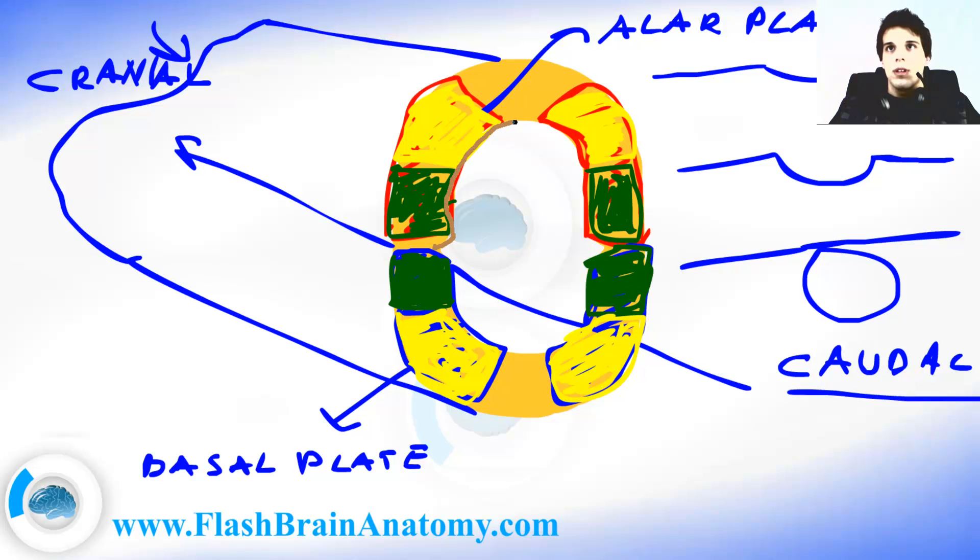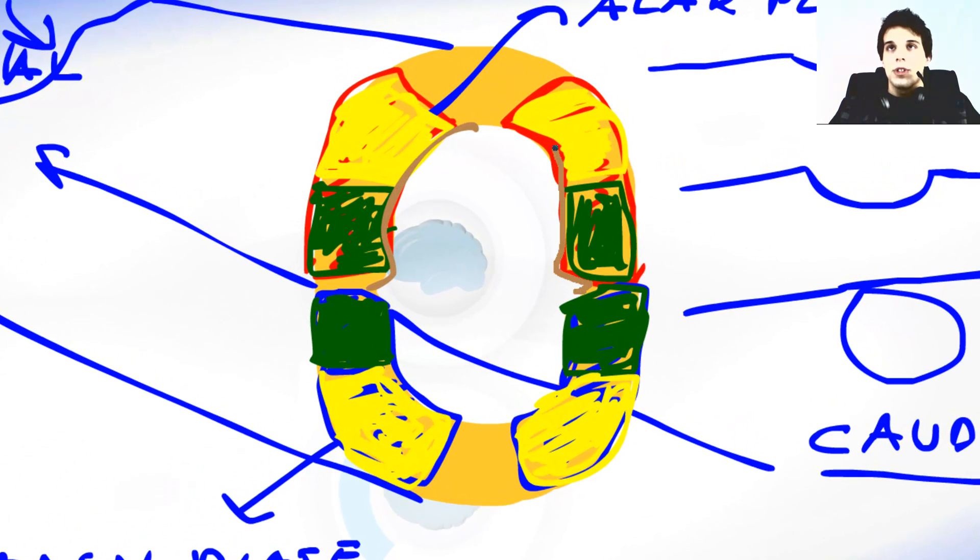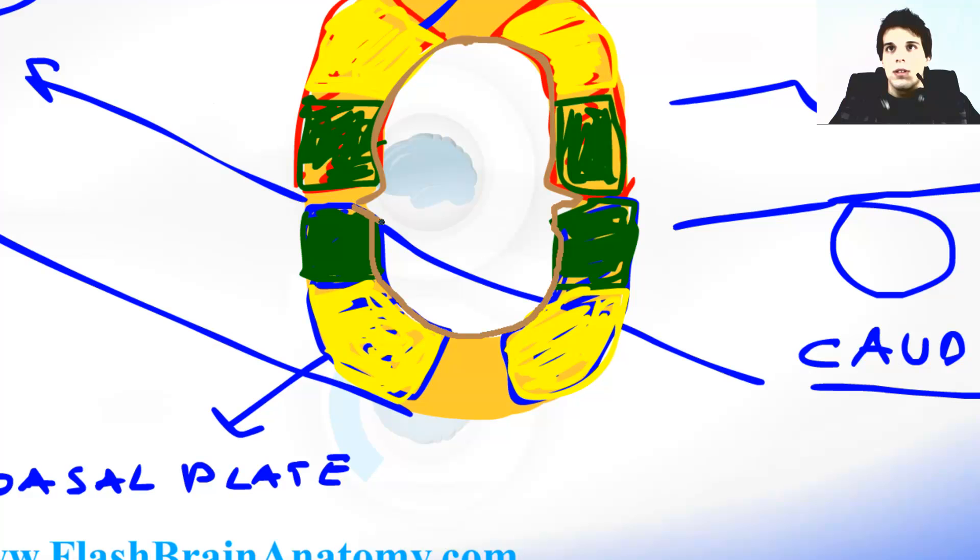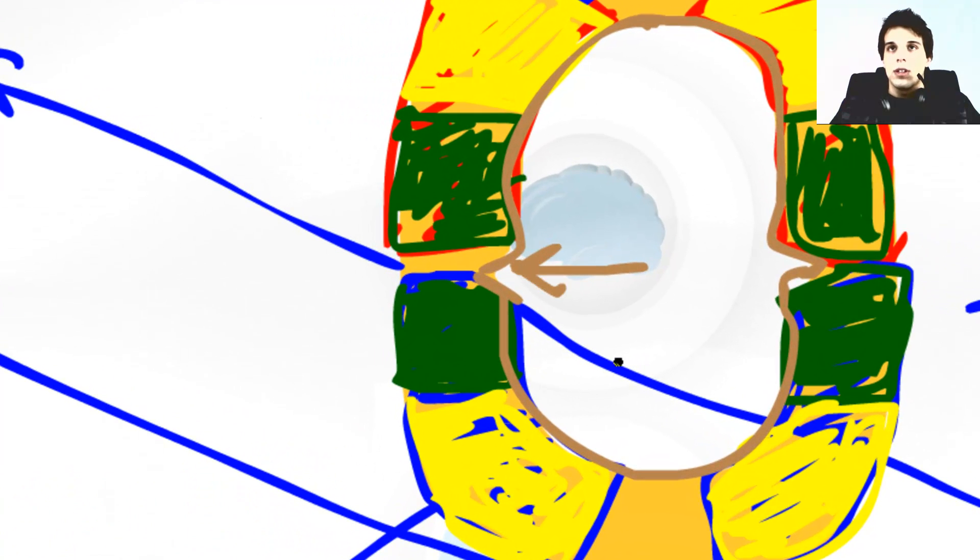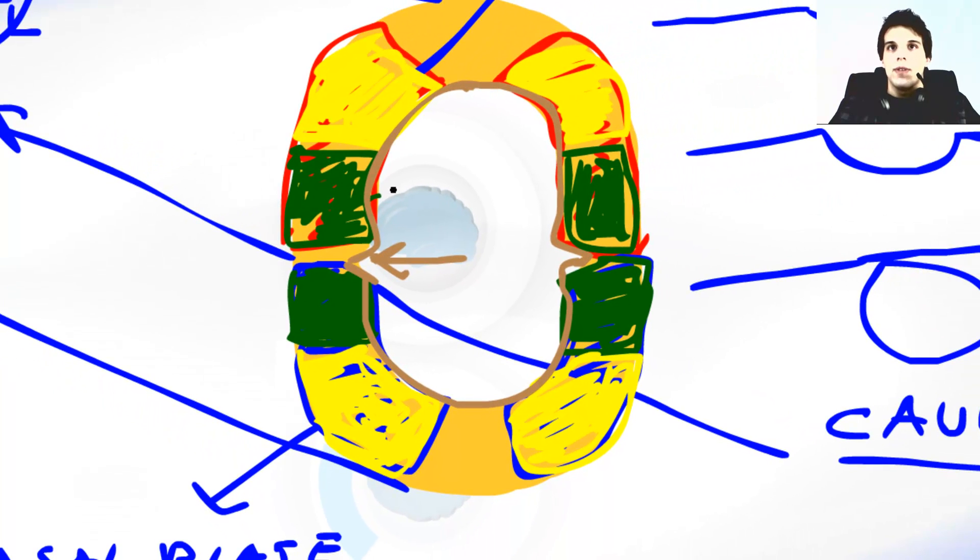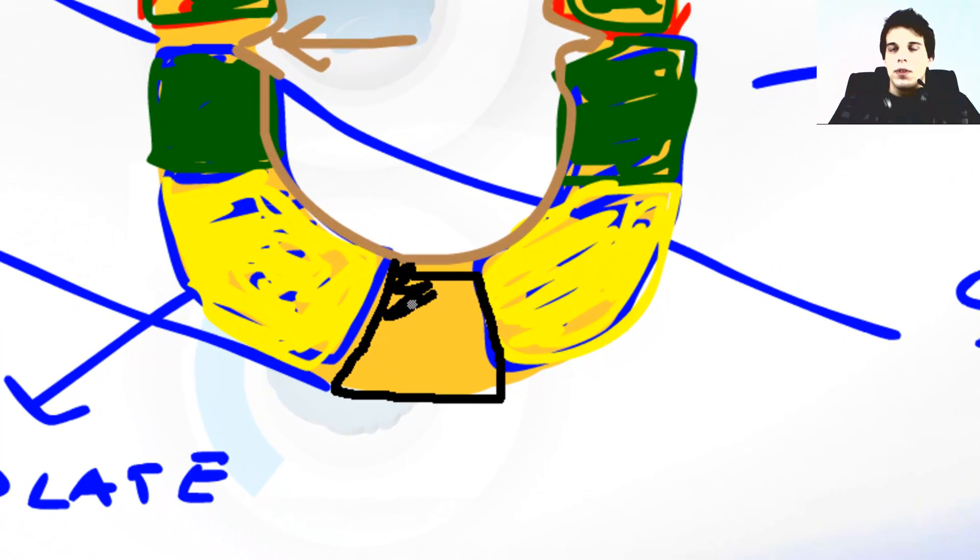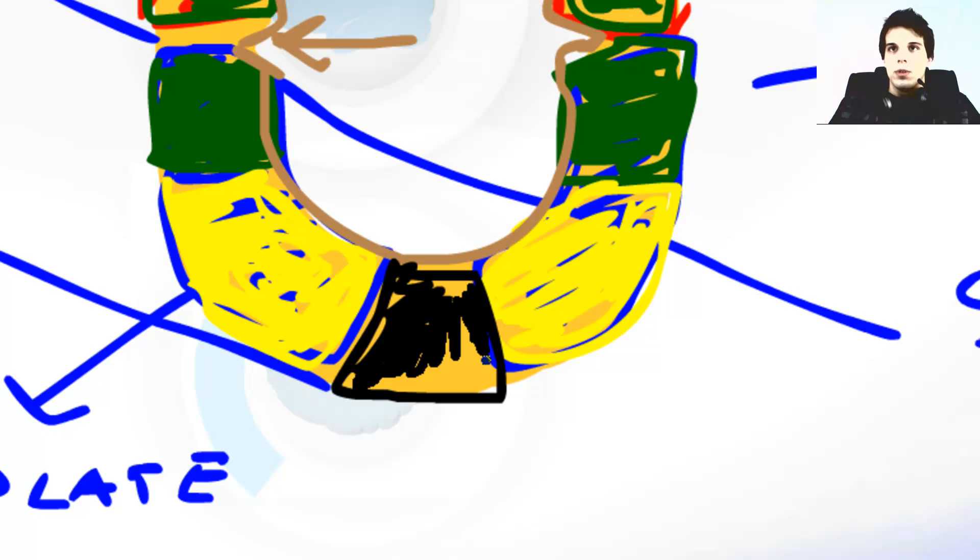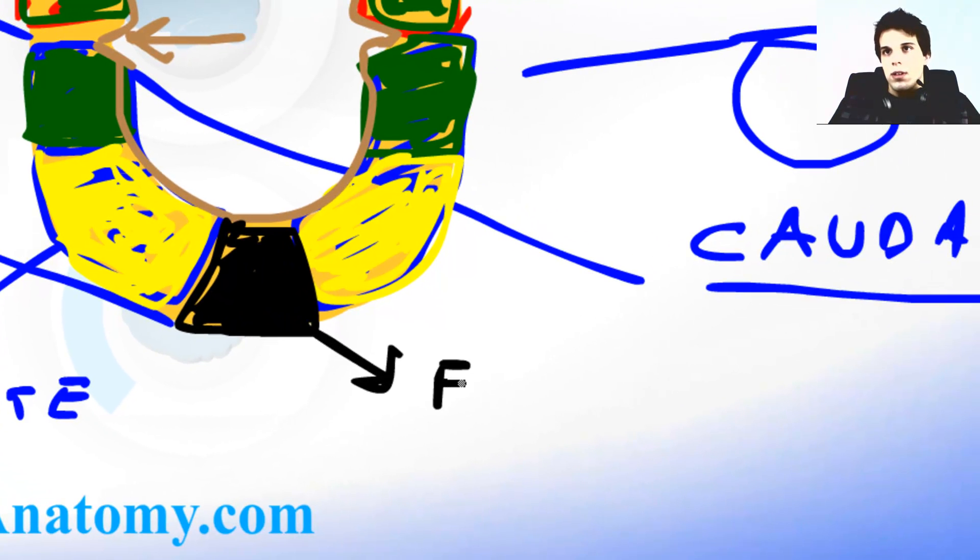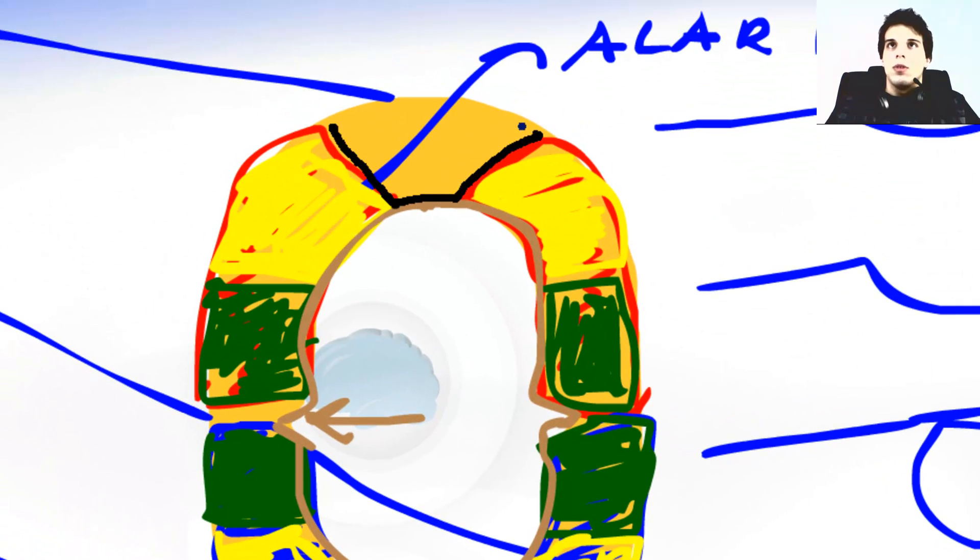And I will just say that this part, this zone that borders the central channel, is called the ventricular zone. And this sulcus over here is the sulcus limitans. It separates the alar plate from the basal plate. This part over here on the ventral side of the neural tube is floor plate. It serves as a guide for positioning of the neural tube. And this part over here, the dorsal part of the neural tube, is called the roof plate.